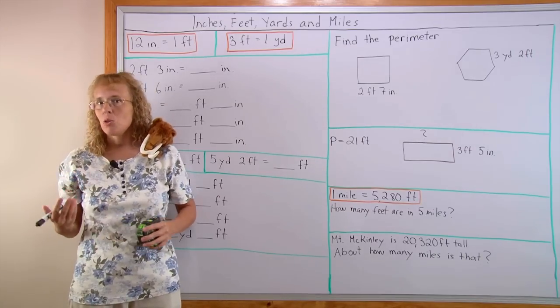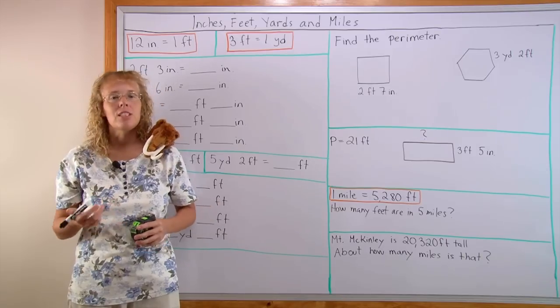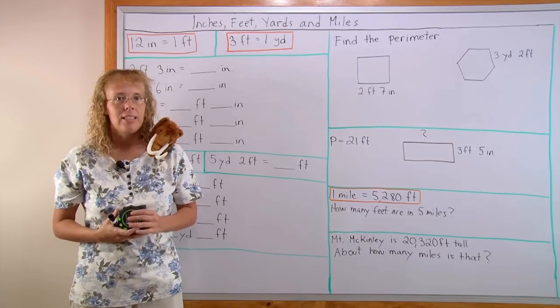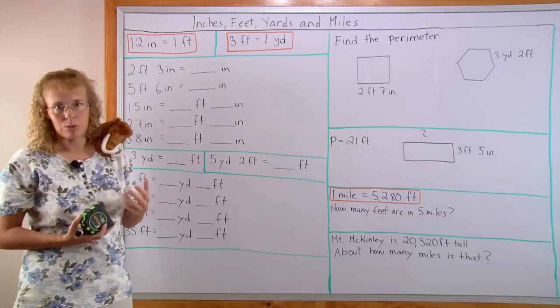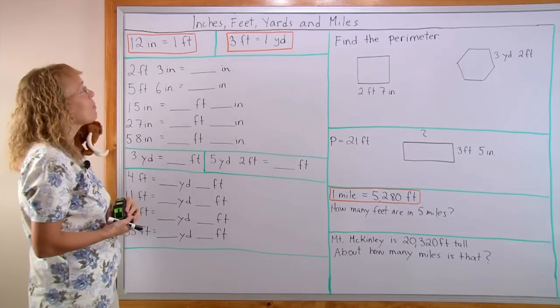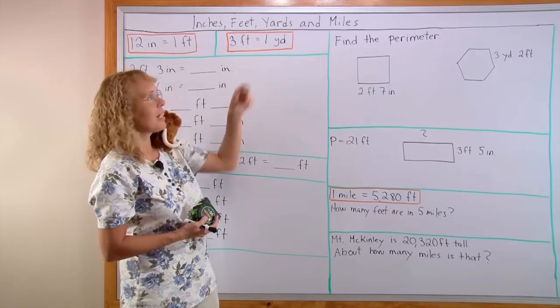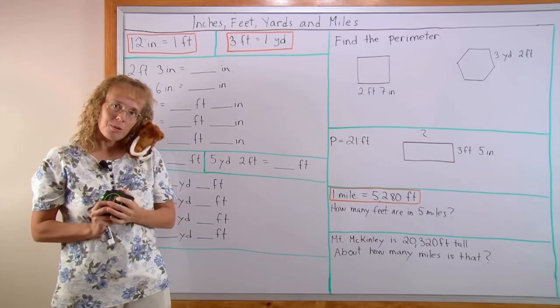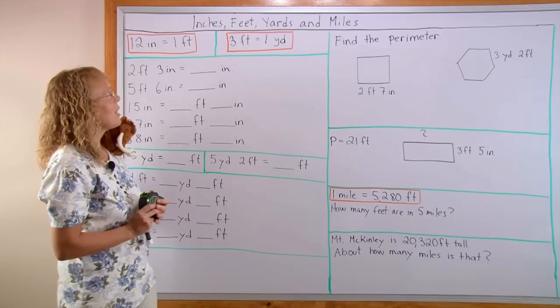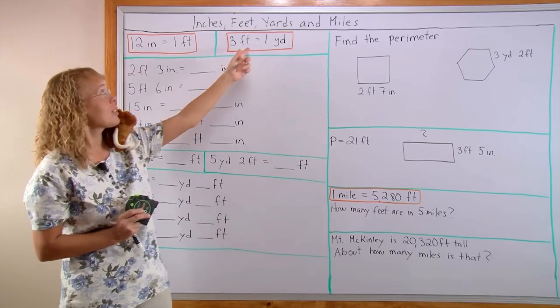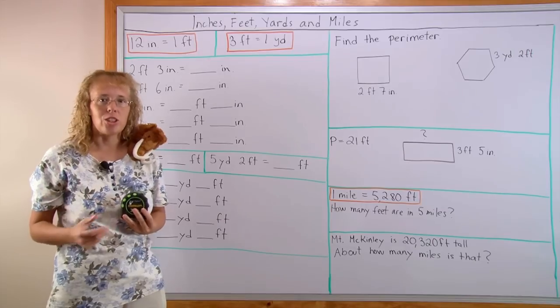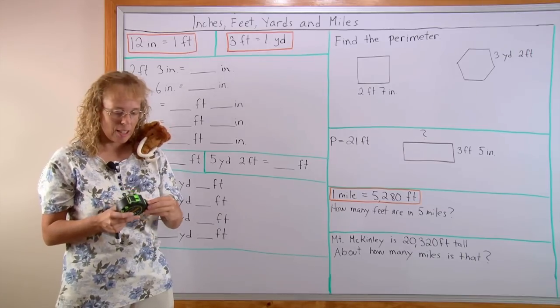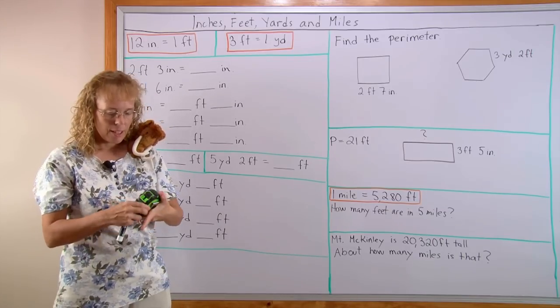So children already know some things about inches and feet, for example. And just as a review, 12 inches makes 1 foot, that is very important to remember, and then 3 feet makes 1 yard. Students of course need to get familiar with some hands-on activities with these particular conversion factors, so that they are allowed to measure objects using a measuring tape. I'll show you one over here.